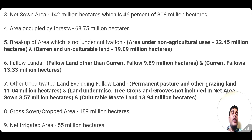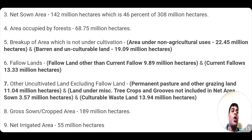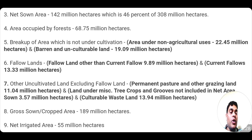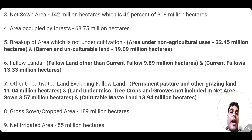Now we are going to talk about the breakup of area which is not presently under cultivation. This can be further broken up into two heads. The first is area under non-agricultural uses, which is 22.45 million hectares. The second category is barren and unculturable land, which is around 19.09 million hectares. Then comes the sixth category, fallow land, which is also of two types: current fallow, which is around 13.33 million hectares, and fallow land other than current fallow, which is around 9.89 million hectares — totalling around 23-point-something million hectares.